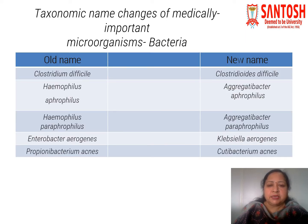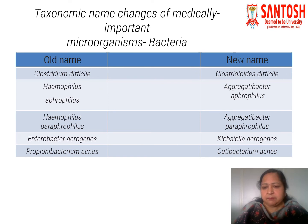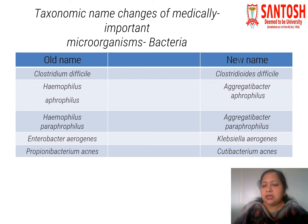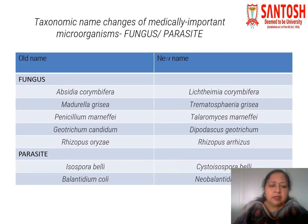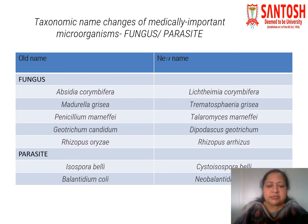Some bacterial names have been changed after taxonomic reclassification, for example Clostridium difficile has been given a new name. Enterobacter aerogenes, a gram-negative bacillus, has also been renamed. Some fungi have also been renamed, like Penicillium marneffei, now named Talaromyces marneffei. Some parasites have also been renamed, like Isospora belli, a protozoan, whose new name is Cystoisospora belli.